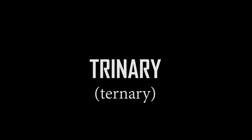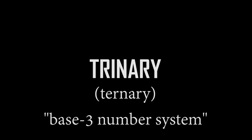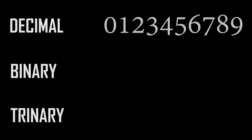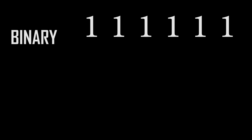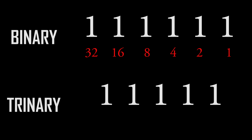Now we get to trinary. Trinary mathematics, also called ternary mathematics, is a number system based on the power of three. Just as decimal has ten symbols and binary has two symbols, trinary has three symbols: zero, one, and two. Remember how each digit in binary is double the digit to its right — one, two, four, eight, sixteen, thirty-two? In trinary, each digit is triple: one, three, nine, twenty-seven, eighty-one.